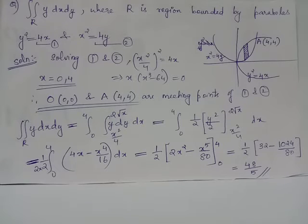If you select vertical strip, this vertical strip has its lower tip touching the parabola x squared equals 4y, from where you will get y equals x squared by 4. And this vertical strip has its upper end which touches the parabola y squared equals 4x.